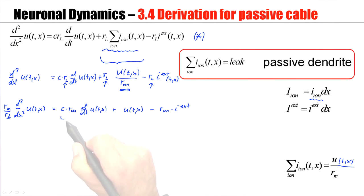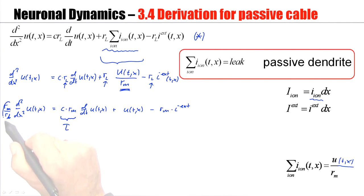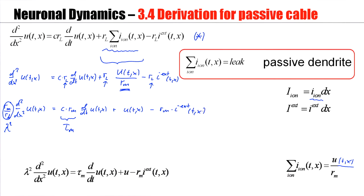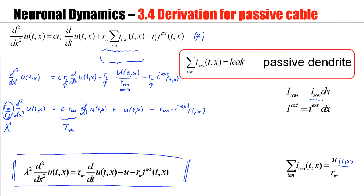Now let's introduce some shorthand notation. C times Rm I call tau. This term here, Rm over RL, I call lambda squared. This gives me the final equation: lambda squared times the second derivative with respect to space of the voltage, minus tau_m times the first derivative of the voltage with respect to time, plus U(t,x), equals Rm times I_external(t,x). This equation is the cable equation for the passive dendrite, or the passive cable equation.